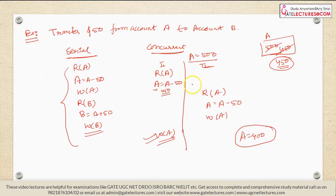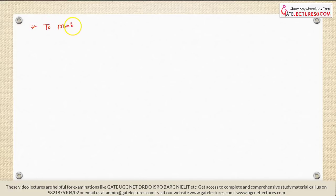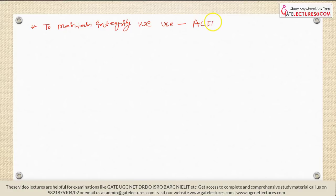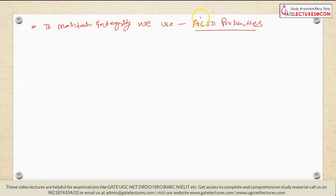To handle this problem, we have many protocols. The problem we just saw was a violation of integrity. To maintain integrity in the database, we have to ensure ACID properties. Any schedule will be valid if it is ensuring ACID properties. What are ACID properties?